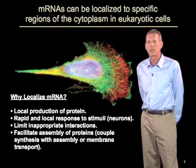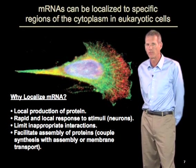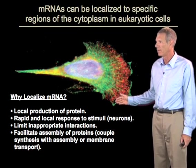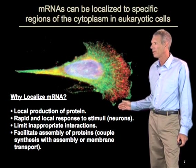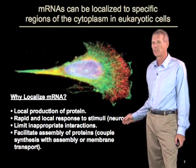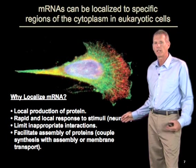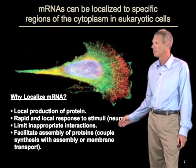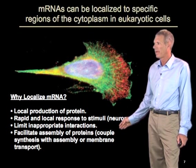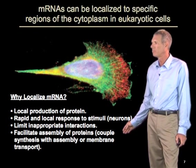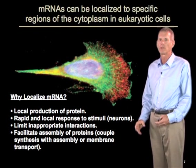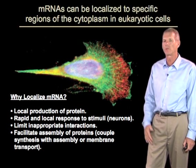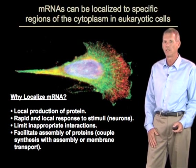This illustrates one reason that mRNAs are localized in eukaryotic cells — to allow local production of protein. But there are other examples where we need to localize mRNAs for other reasons. For example, in neurons, the localization of mRNAs to specific synapses allows a rapid and local response to various stimuli. Localizing RNAs can also limit inappropriate interactions and can facilitate the assembly of proteins — for example, by localizing mRNAs to membrane compartments so proteins can be transported across that membrane more efficiently during their biogenesis.